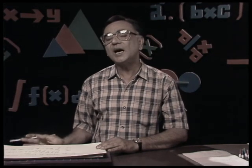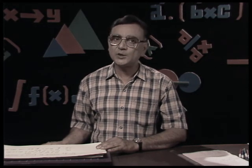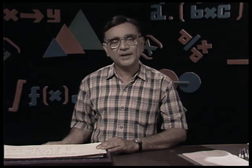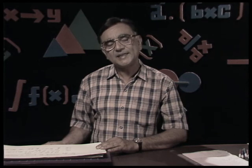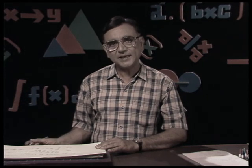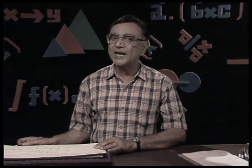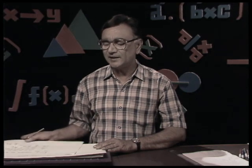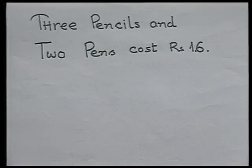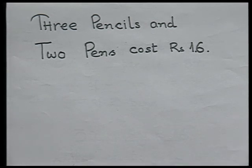In this equation I had taken one variable. Now let us think of another situation where instead of one variable we have two variables. I say three pencils — let us take a situation where I am talking of three pencils and two pens, and I know the total cost. If three pencils and two pens cost 16, how possibly can I solve such a type of equation?